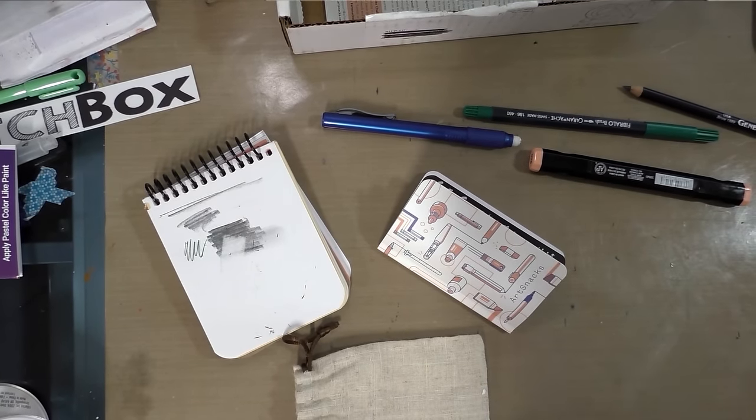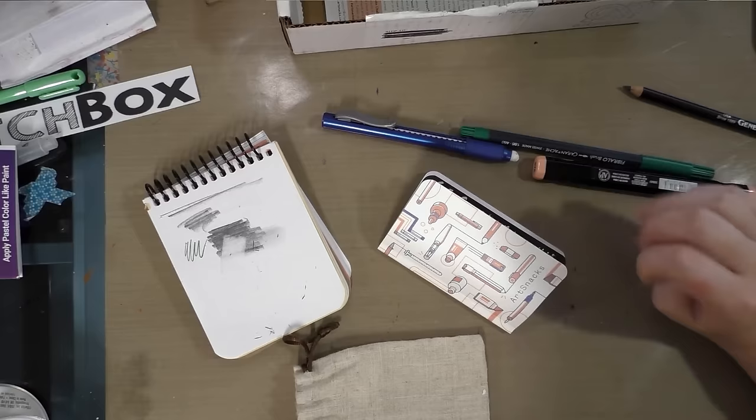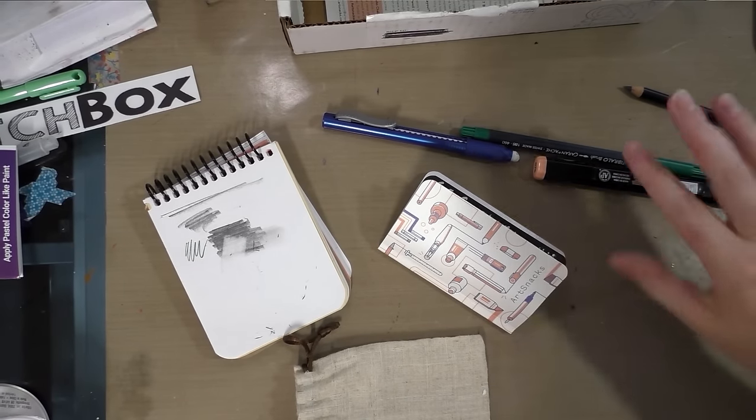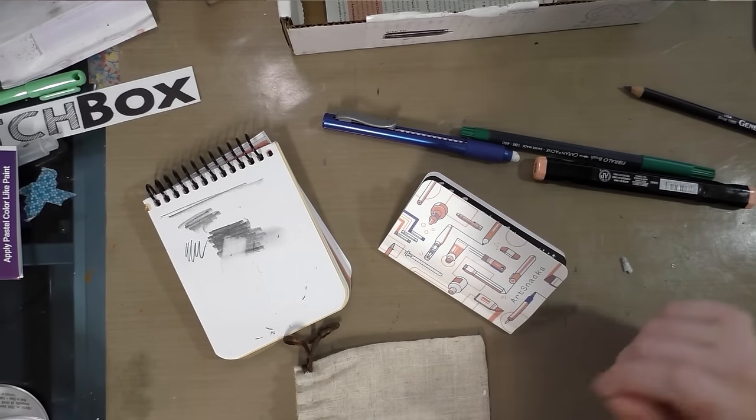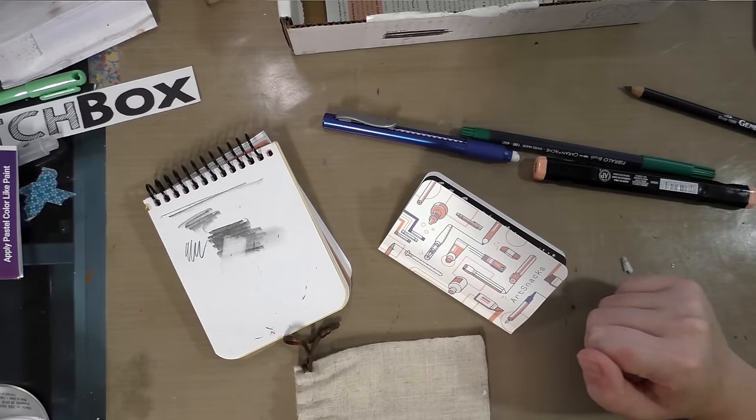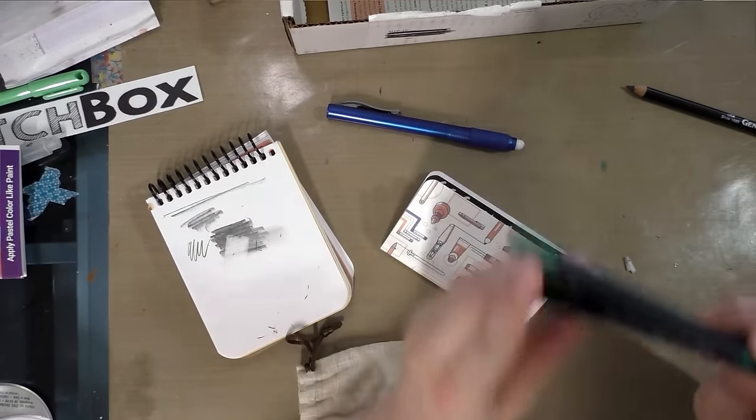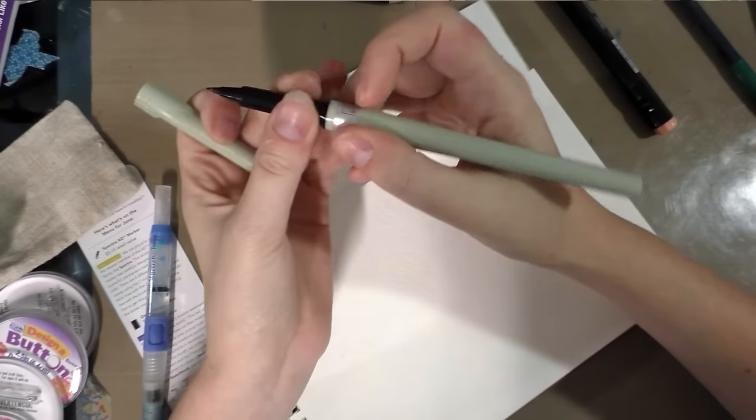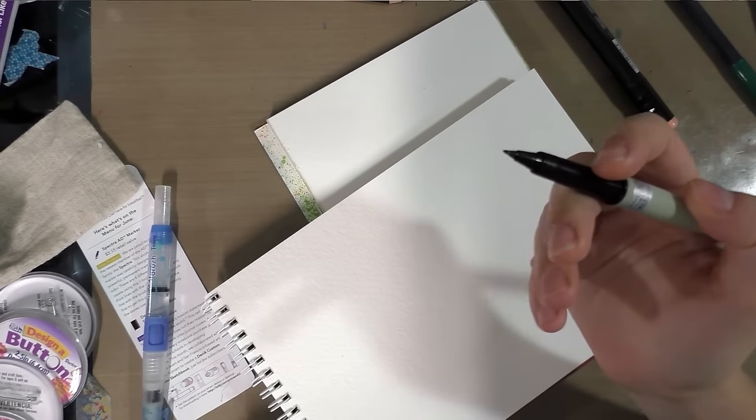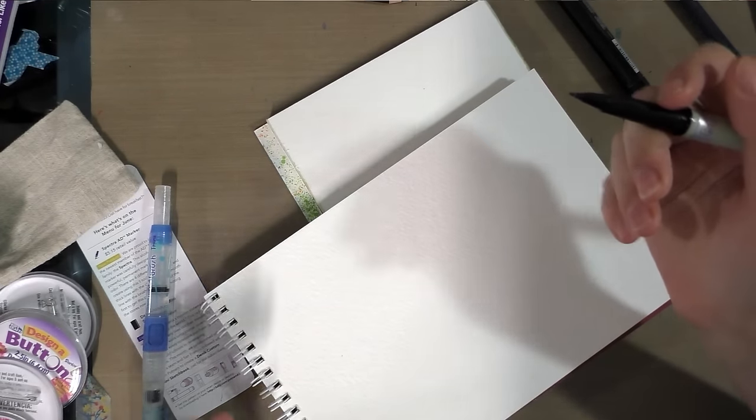So that was my June art snacks. My total estimated value from my own research was $18.64. The box ships for $20. So I think this month is a pretty good value. And I am really excited about the two markers that were included with my box.